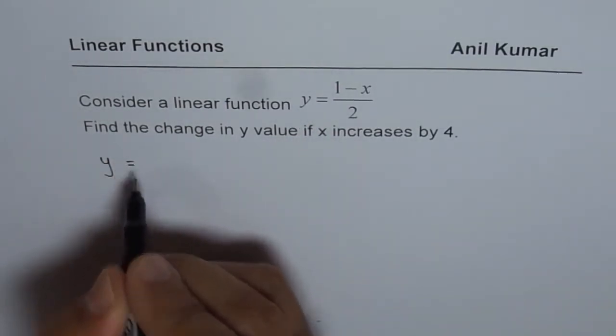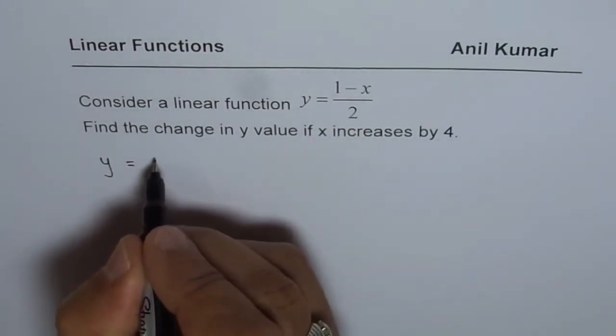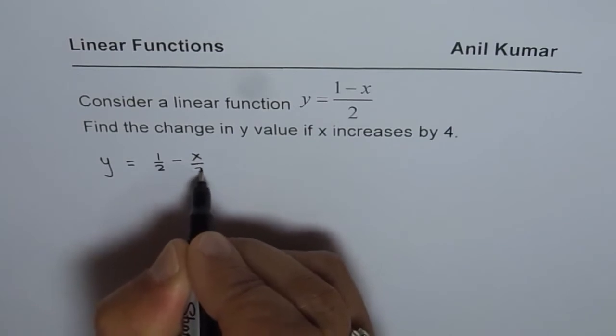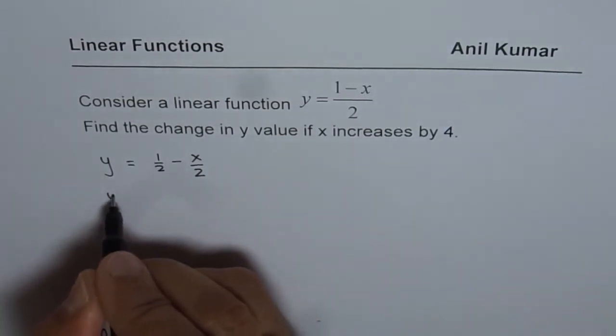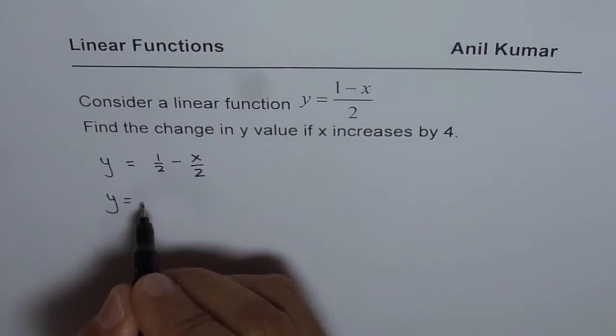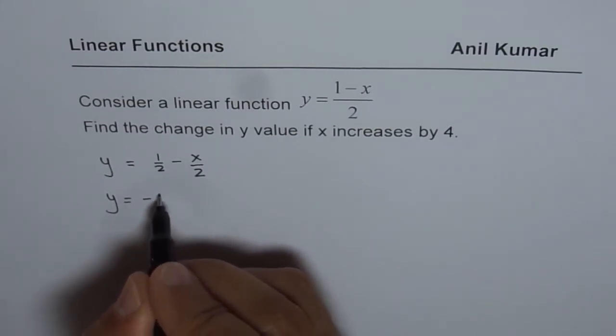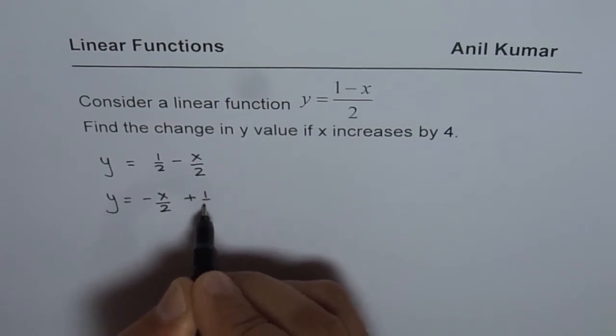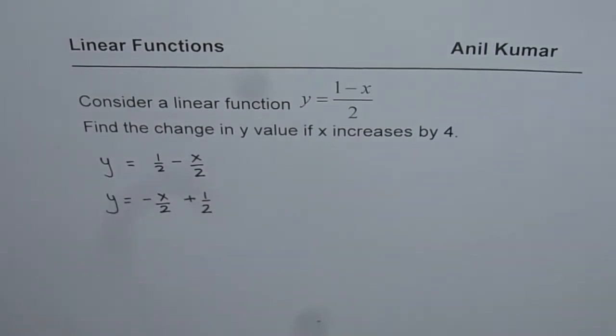So it is y equals to, when I divide by 2, I get half minus x over 2. And normally we write it as y equals mx plus b, which is minus x by 2 plus half. That is how normally we write a linear equation, so I have rewritten this equation here.